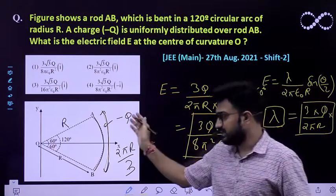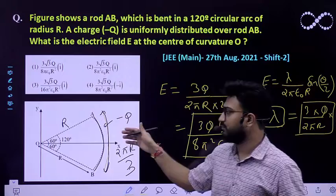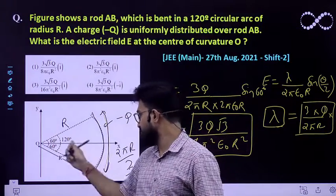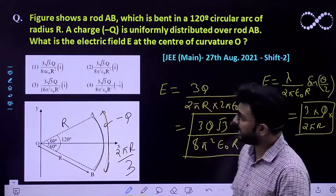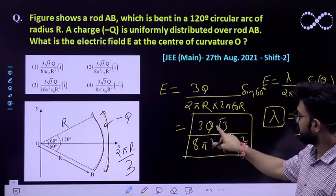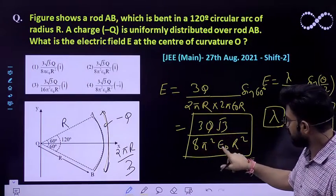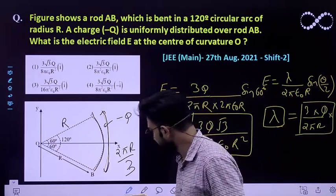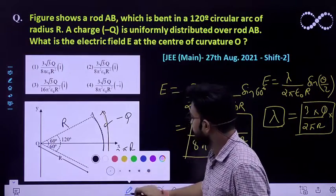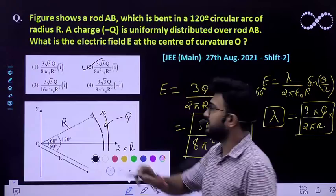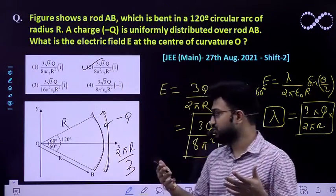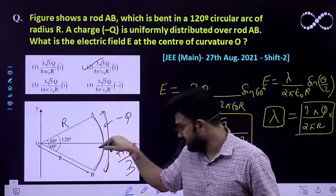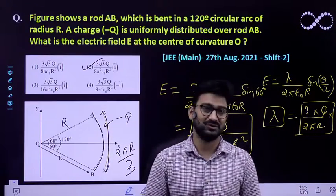This is the magnitude that we are getting. And since it is a negative charge, the electric field would be in the plus I direction. So which answer would be correct? 3 root 3 Q by 8 pi square epsilon naught R square. So our second option would be the correct option, and it has to be in the I cap direction because the net electric field is in the X direction. I hope this question is clear to everyone. Thank you.